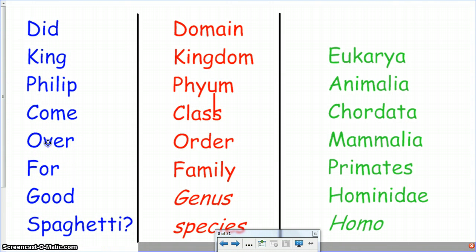So the reason why you remember did King Philip come over for good spaghetti? The reason why you memorized the blue is so that it can help you remember the order of the red. So while you may be able to remember all of these, it's important that you know the actual sequence that they happen in because the sequence is important.